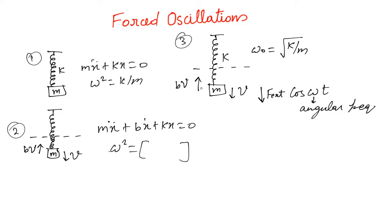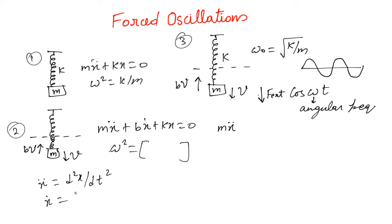Now we are dealing with both damping and an external force. The damping is BV where V is the velocity, and the external force is F_external · cos(ωt), which is sinusoidal in nature. The differential equation is: mẍ + bẋ + kx = F_external · cos(ωt), where ẍ = d²x/dt² and ẋ = dx/dt.